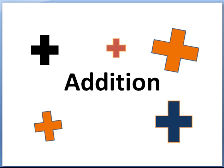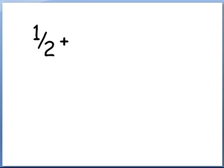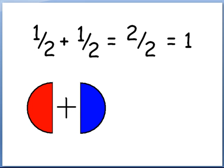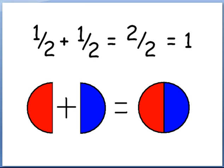Let's take a look at addition. We have the numerator of 1 over the denominator of 2 — that's 1 half. And 1 half plus 1 half is equal to 2 over 2, because when you're adding fractions, you simply add the numerators. The denominators have to be the same. Looking at that graphically, we have 1 half of a circle plus 1 half of a circle equals 1 entire circle.